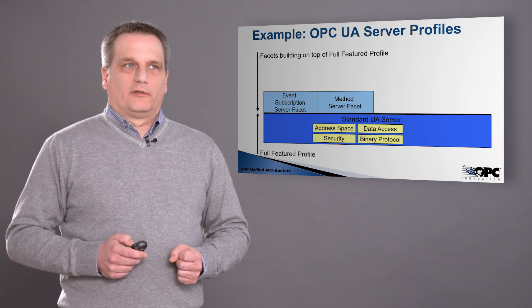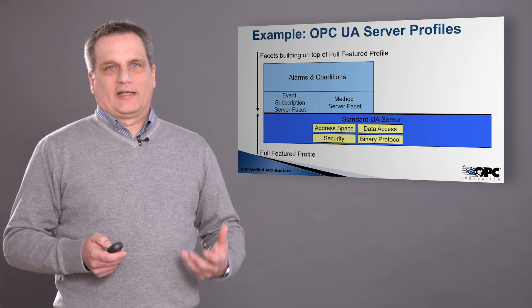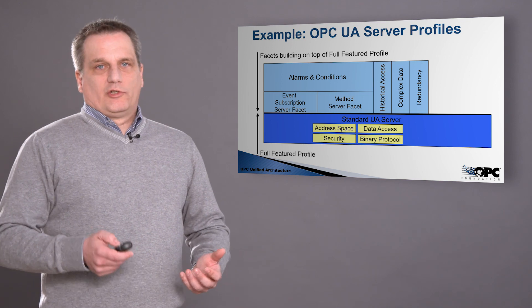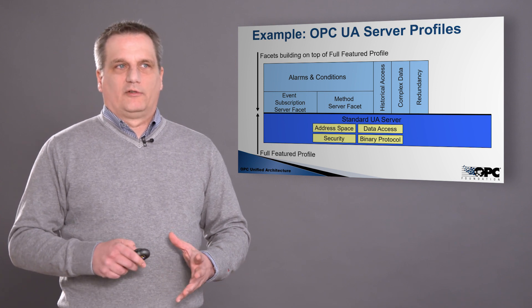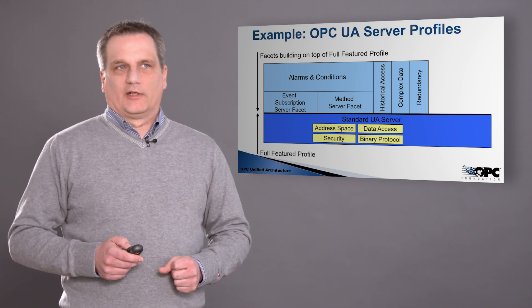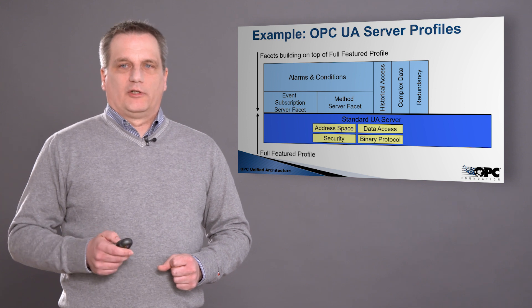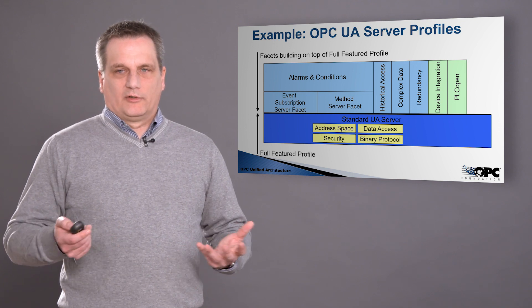The two together give us alarms and conditions. So this would be a standard UA server that has alarms and conditions capabilities — we can have an event and with the method we can acknowledge this event. In addition to that, the server can be extended with a historical access and with a complex data or redundancy facet. The server can also be extended with the device information model, the PLC open information model, or any other kind of companion specification model.